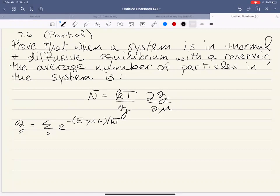So it says that, prove that when a system is in thermal and diffusive equilibrium with a reservoir, the average number of particles in the system is given by n̄, which is equal to kT over z times partial of z with respect to μ. Now here n is the number of particles, and bar stands for the average number of particles.